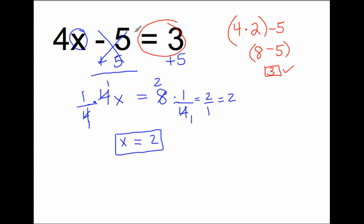You do this because you're actually using the equality properties. If I add a number to this side, I have to add the same number to this side, because you're saying that both numbers are the same number — that's what the equal sign means. If I multiply this entire number by 1 fourth, I have to multiply this entire number by 1 fourth as well. That's what we call the equality property of multiplication, or of addition if I'm adding.